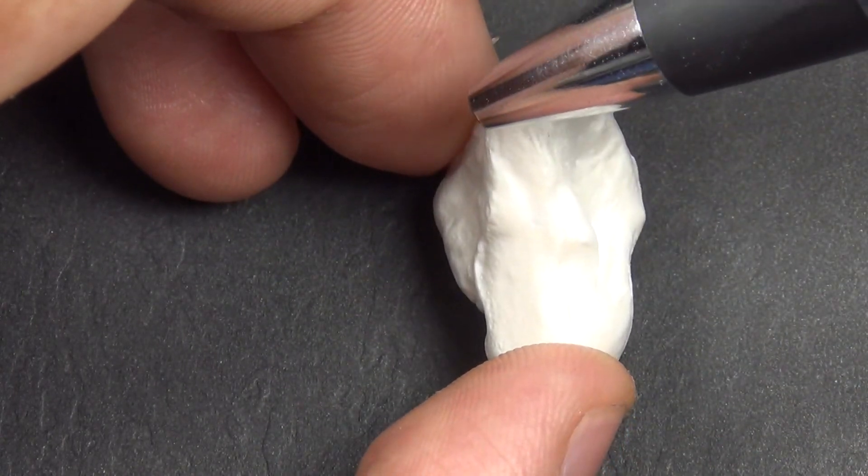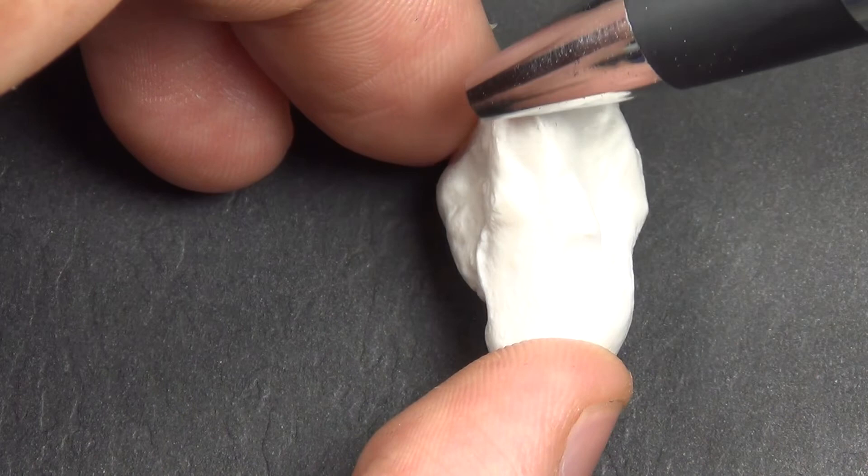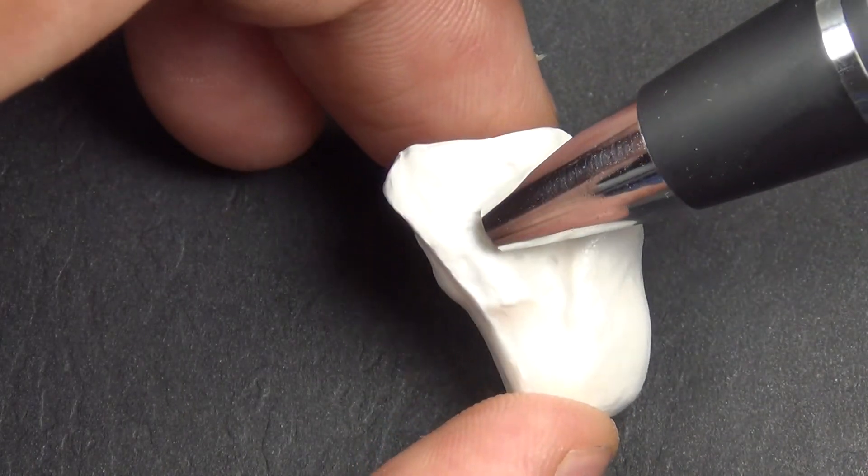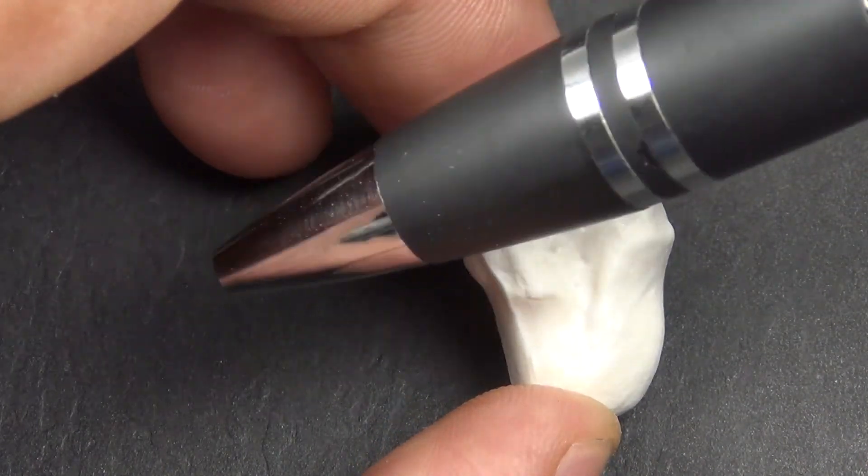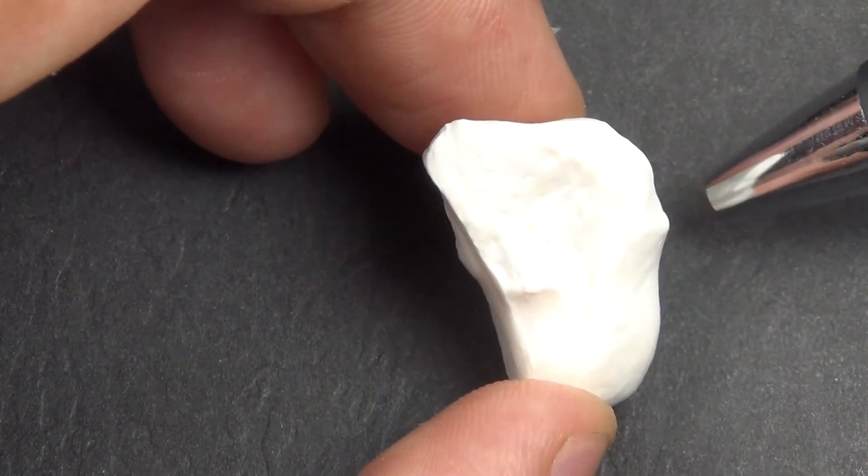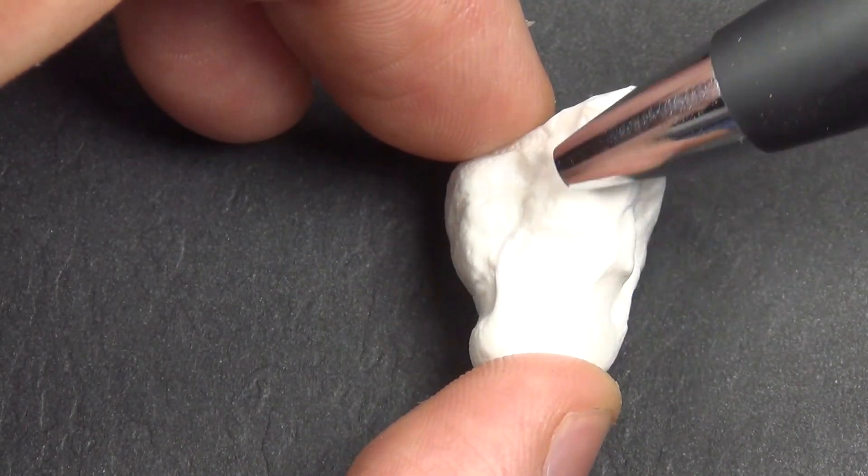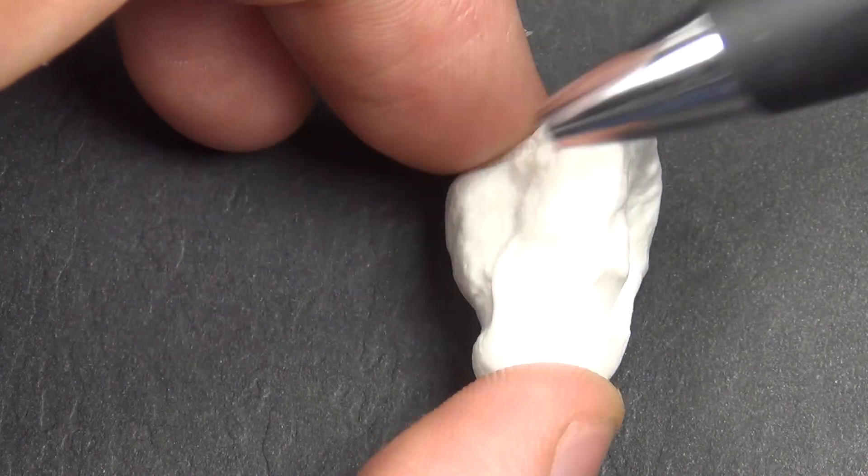And then, if you find this elongated facet for the hamate, that will actually point to the side of the body from which the specimen came. So in this case, this elongated facet for the hamate is pointing left. So this would be a left specimen.